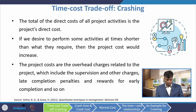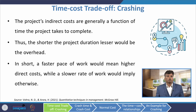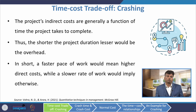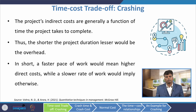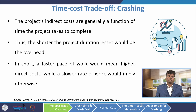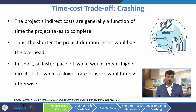The project's indirect cost is generally a function of the time the project takes to complete. The shorter the project duration, the lesser would be the overhead. A faster pace of work means higher direct cost, while a slower rate of work implies otherwise. When considering overall project cost, you have to consider both total direct cost and total indirect cost.